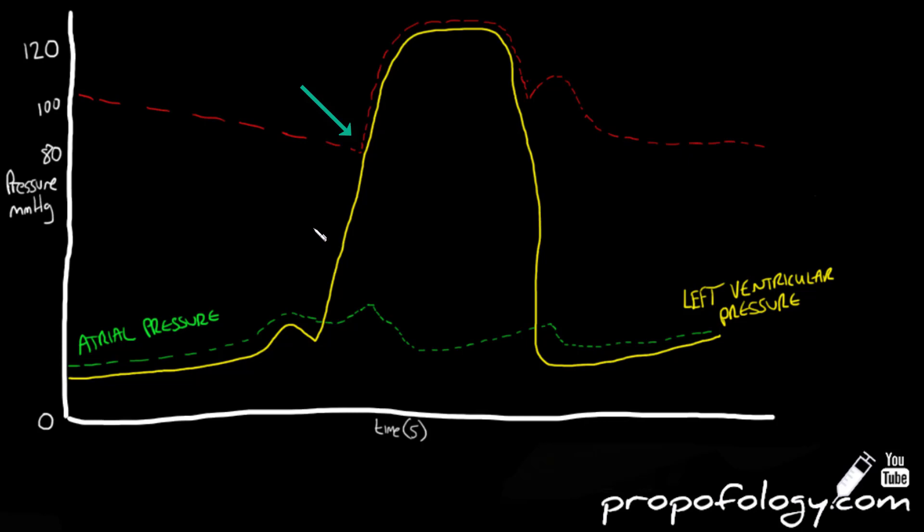Once the aortic valve opens, however, this coincides with the large spike in left ventricular pressure. The pressure within the aorta increases just above the pressure in the left ventricle.